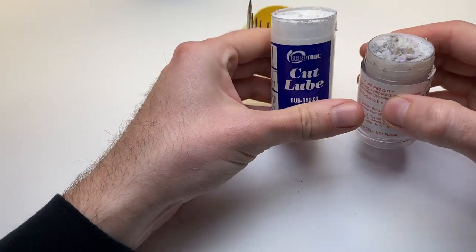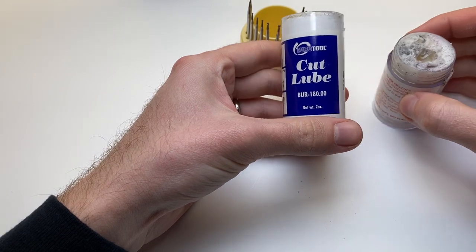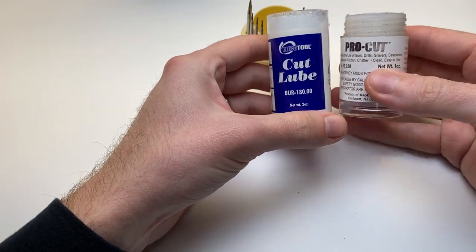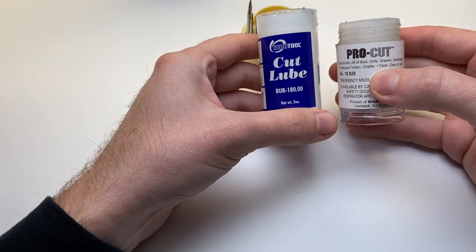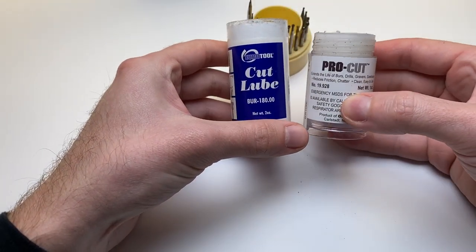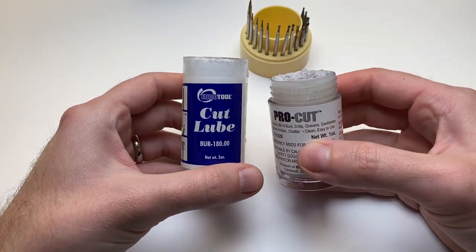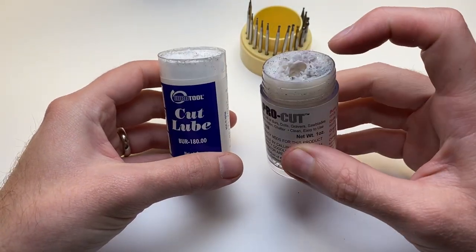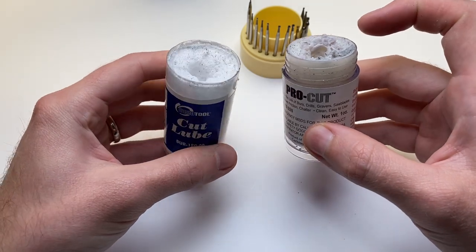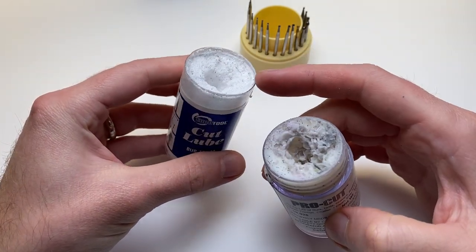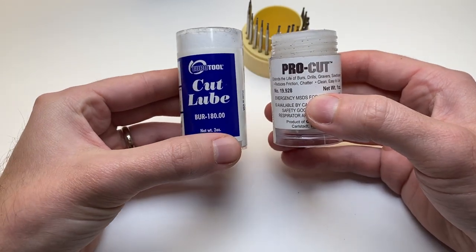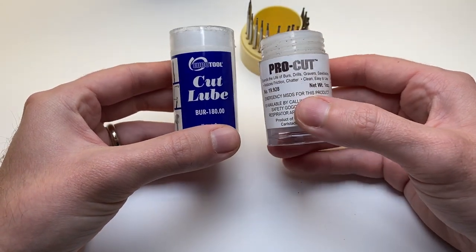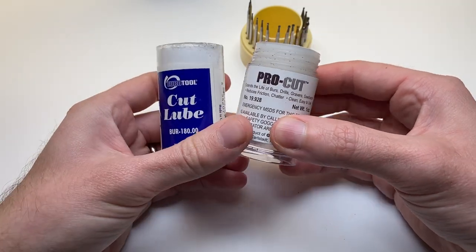And a quick tip with using a tungsten carbide burr, any metal to metal friction creates heat so you want to use some kind of lubrication. These are the two products that I've used in the past and I found that these work pretty well. This one is more liquidy and this one is more like powder based so depending on what you like. I like the ProCut better I think and yeah it works well.